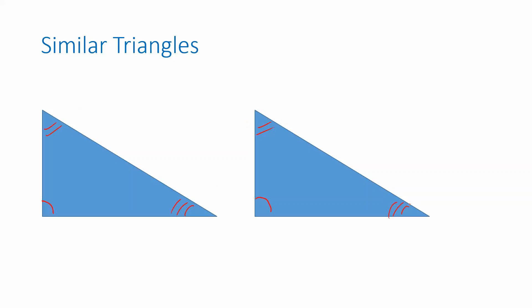Now, if I resize the second triangle, if I make it bigger or smaller or I rotate it around, the side lengths might change. But as long as the angles don't change, I will still call the two triangles similar, even though they're no longer congruent.